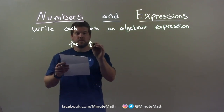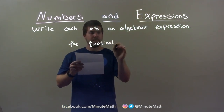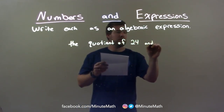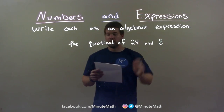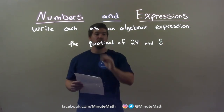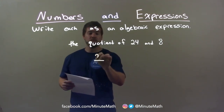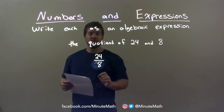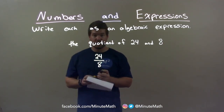The quotient of 24 and 8. So the quotient of 24 and 8 — quotient is going to be division. So we're dividing here, making a fraction. The quotient of 24 and then 8 in the denominator. Our final answer: 24 divided by 8.